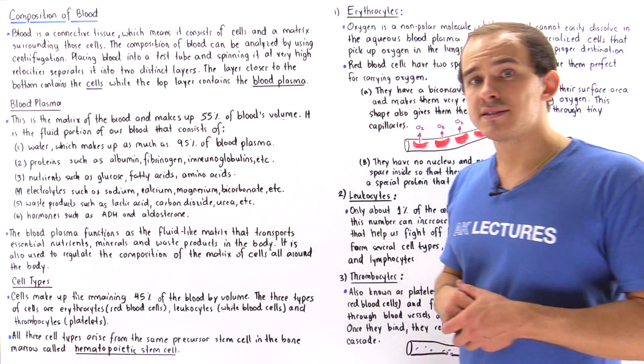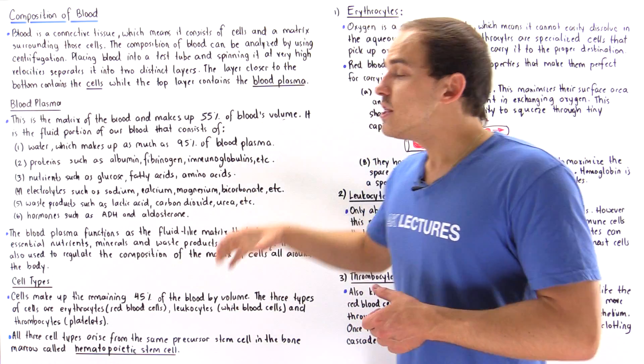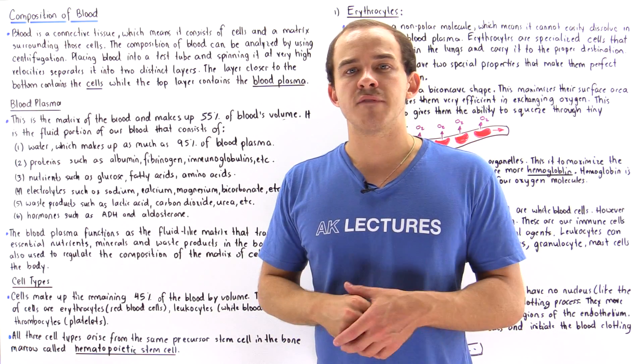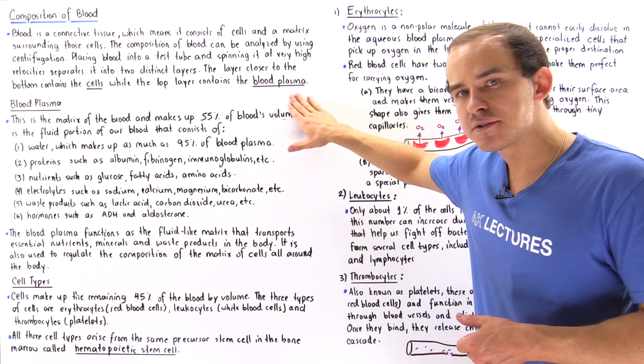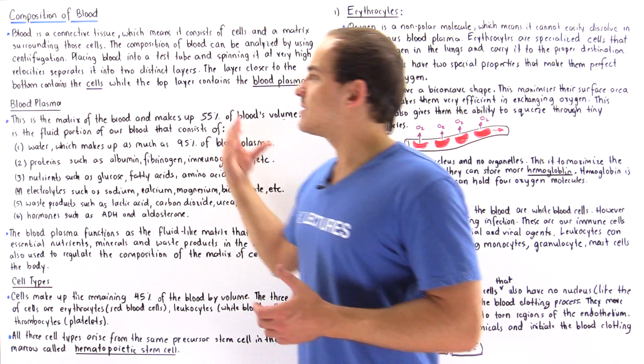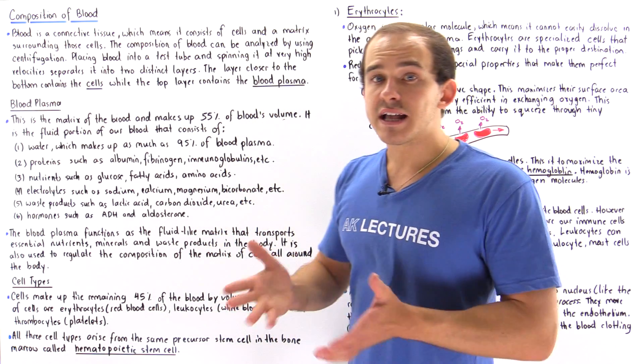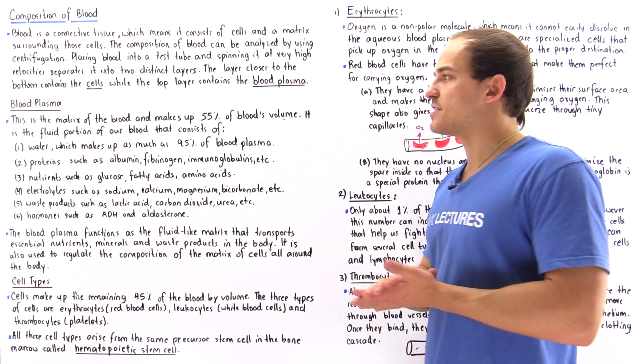And so after this process we basically see two different layers form. The bottom layer found at the bottom of the test tube consists of our cells and the upper portion of the test tube consists of the blood plasma. So let's begin by discussing what the blood plasma is, what is found inside the blood plasma and what the function of our blood plasma is.